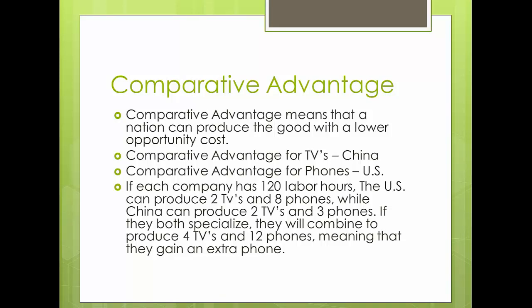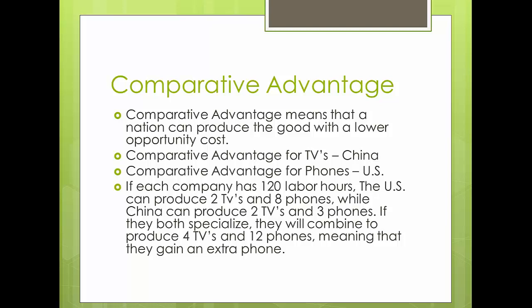China has the comparative advantage for producing TVs. Even though it requires more hours to produce a TV, the opportunity cost of producing a TV for China is only one and a half phones. But the US sacrifices two phones for every TV they produce. The US, on the other hand, has a comparative advantage in producing phones — they only sacrifice half a TV for every phone they produce, while China sacrifices two-thirds of a TV. So if China produces TVs and the US produces phones, they will combine to produce more than if they each tried to produce both themselves.